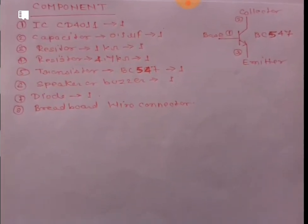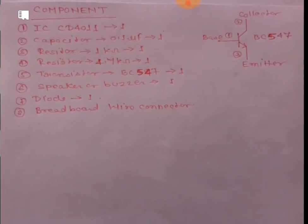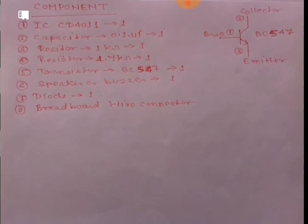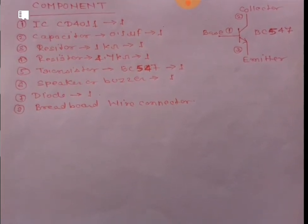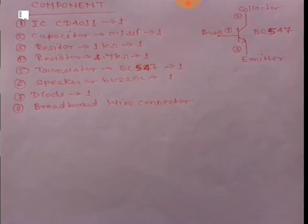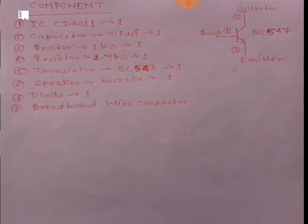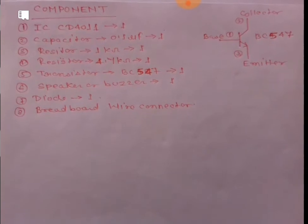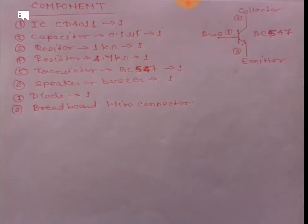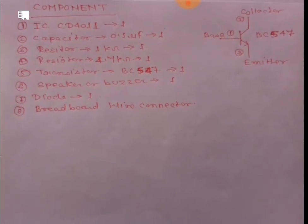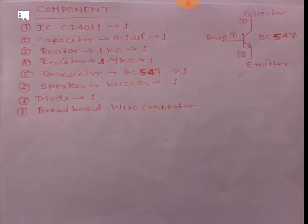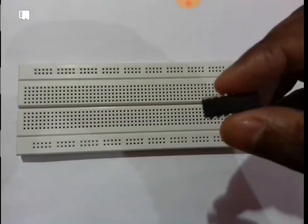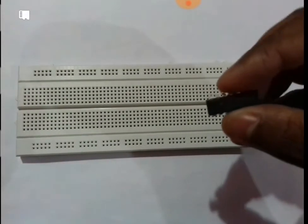This is the symbol of the transistor. Terminal 1 is the base, terminal 2 is the collector, and terminal 3 is the emitter. In this minor project, we are using a BC547 transistor and CD4011 IC.